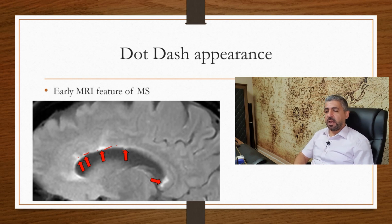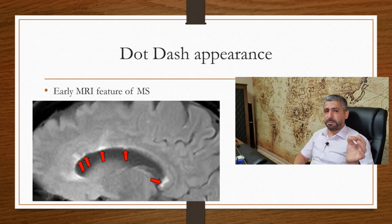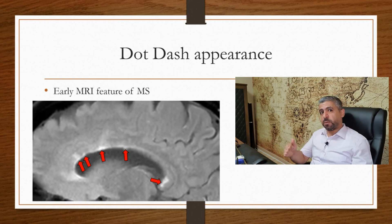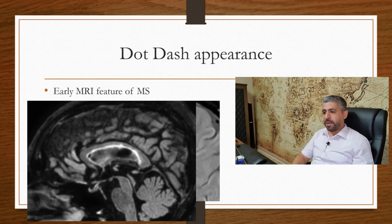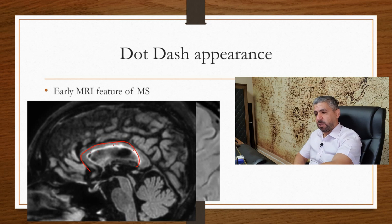It represents subcallosal subependymal areas of T2 signal hyperintensity. Performing sagittal FLAIR — fluid attenuation inversion recovery — sequences is very helpful in patients with MS, so try to obtain those if you are suspecting MS. This is a very progressed type of dot-dash appearance; they tend to coalesce with time, forming a continuous line with some nodularity.